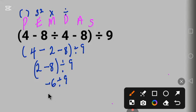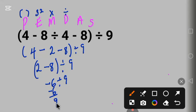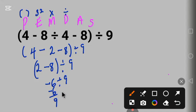2 minus 8 is negative 6, divided by 9. So negative 6 divided by 9 can be written as negative 6 over 9. What number can divide both 6 and 9? We call such a number the GCF — the greatest common factor. Let's look for the common factor.